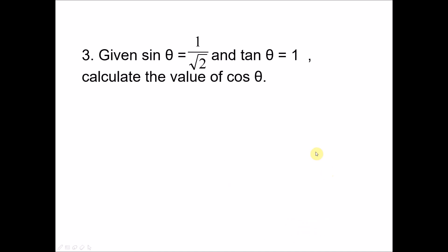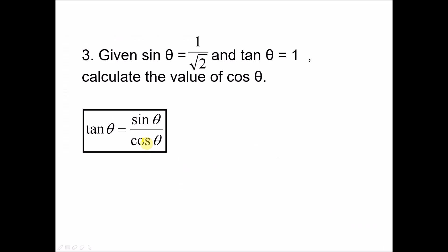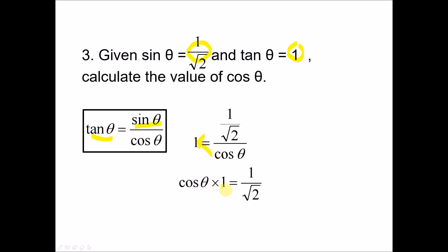Question 3: given sine θ = 1/√2 and tangent θ = 1, find cosine θ. Using the formula tangent θ = sine θ over cosine θ: 1 = (1/√2) over cosine θ. Rearranging, cosine θ = 1/√2.